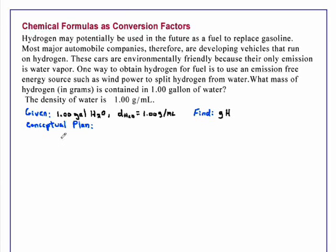In our plan, we are going to start with the given information, which is the gallons. We need to convert to a metric unit, which would be liters. Now we have information in the density that will allow us to go from a volume to a mass, but the volume is in milliliters, so our next step will be to convert liters to milliliters of water.